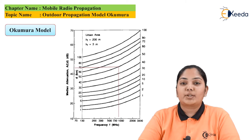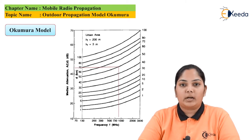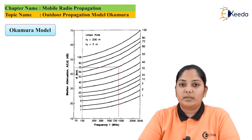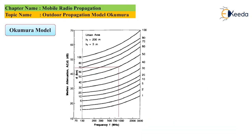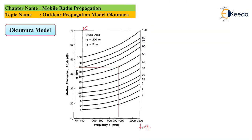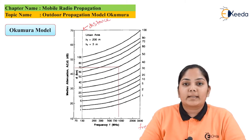What Okumura did was take measurements of the received signal and plot a graph. In this graph, the x-axis has the frequency. There are two y-axes: one axis shows the distance between the transmitter and the receiver, while the second axis shows the mean attenuation.